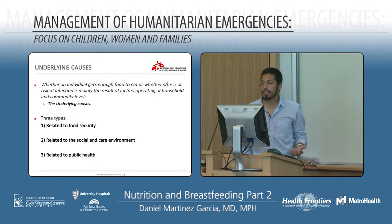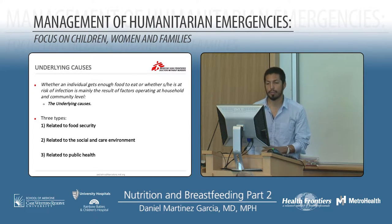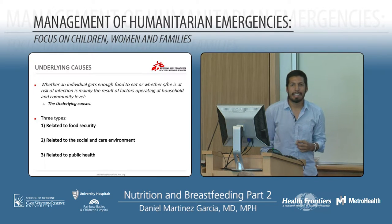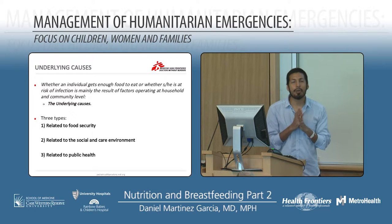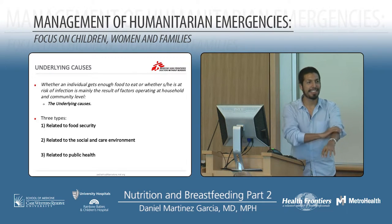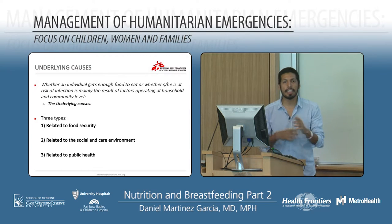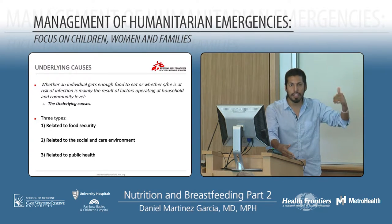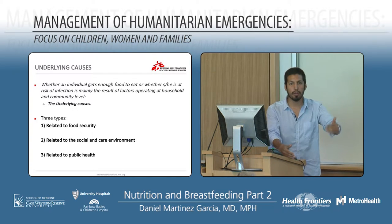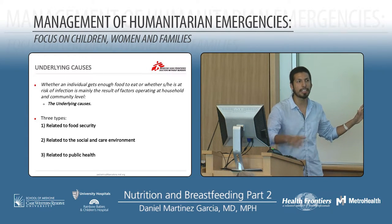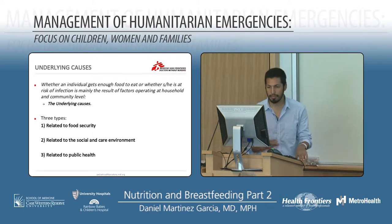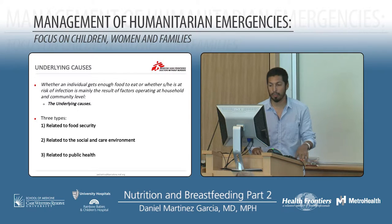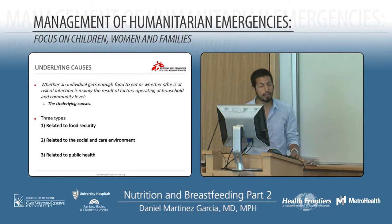Whether an individual gets enough food or is at risk of infection is mainly the result of factors operating at household and community level. We know the causes — and what is very sad is that sometimes we don't want to intervene at the cause level, we just deal with the consequences. For example, we know the problem in Somalia or Kenya is speculation over crop prices every year, but we don't intervene there — we just intervene with the dying people at the end.